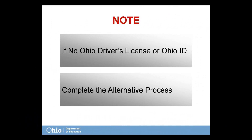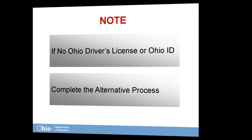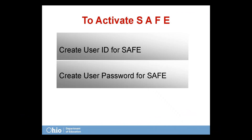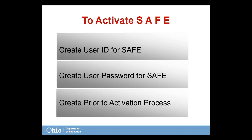Note: if you have no Ohio driver's license or Ohio ID, you must use the alternative validation process. You may find more information on that process on the SAFE registration website. As part of the activation process, you will need to create a user ID and password for logging into the SAFE system. It is best to identify and record this information prior to starting the process.